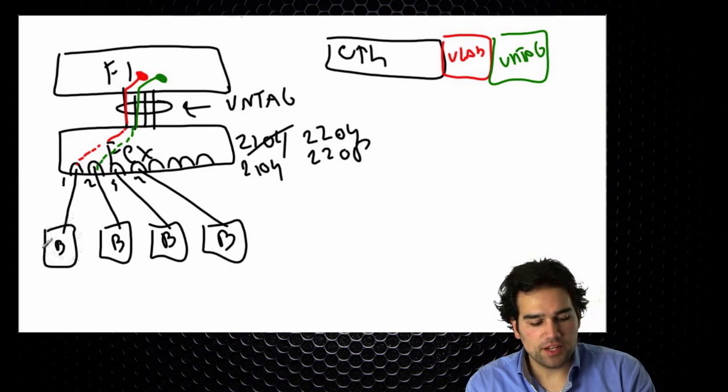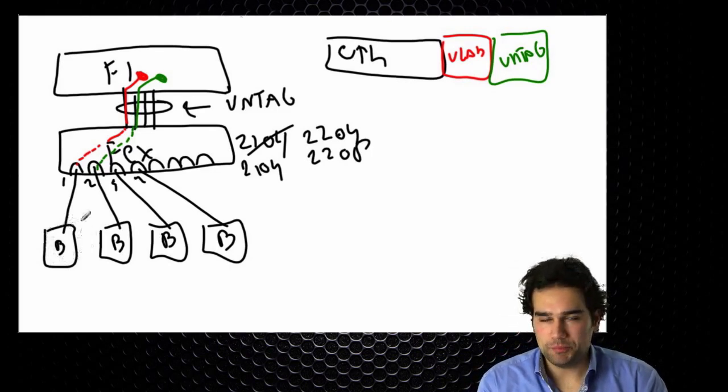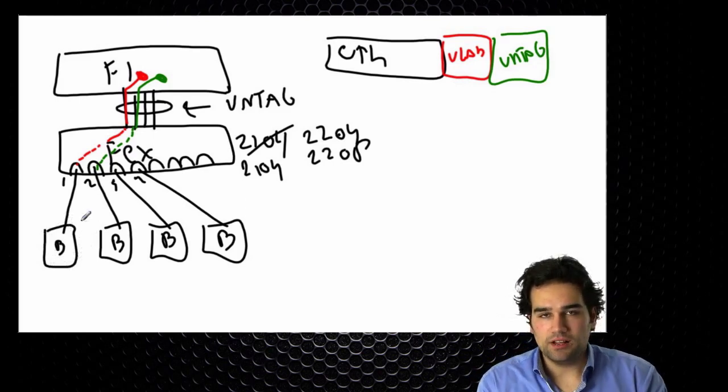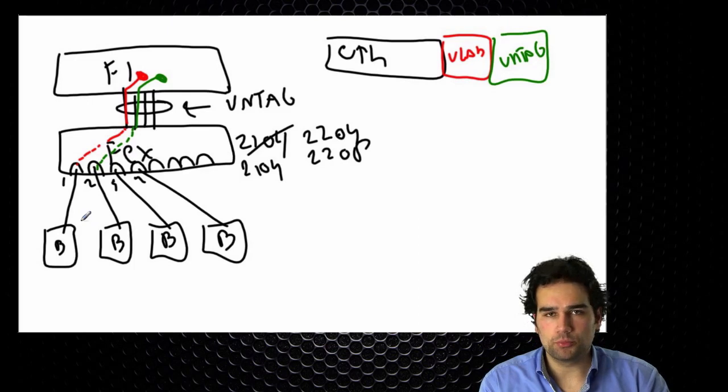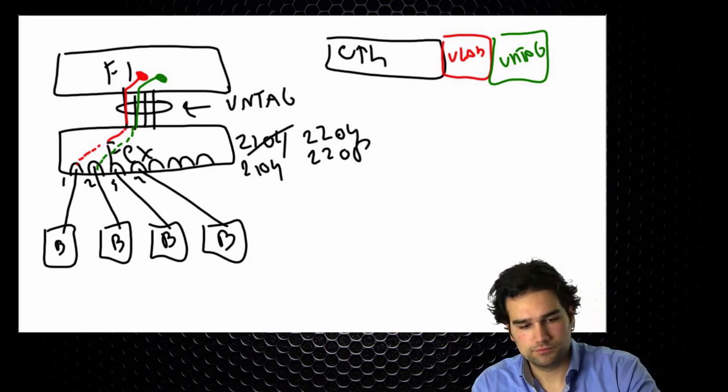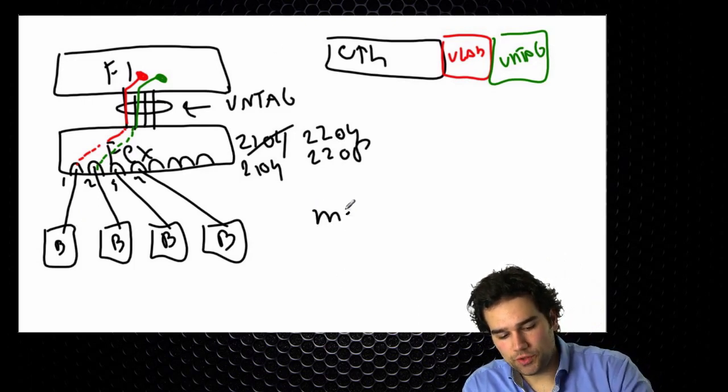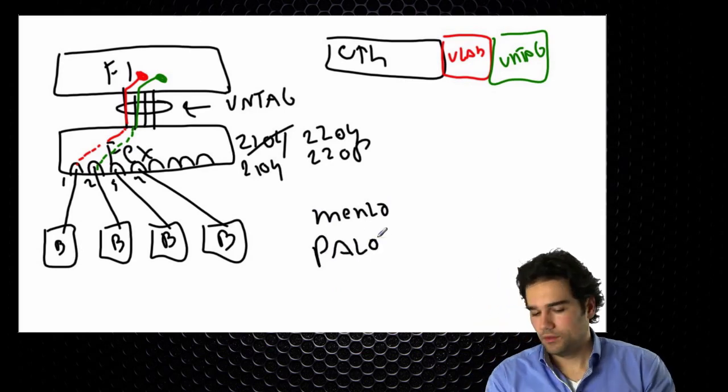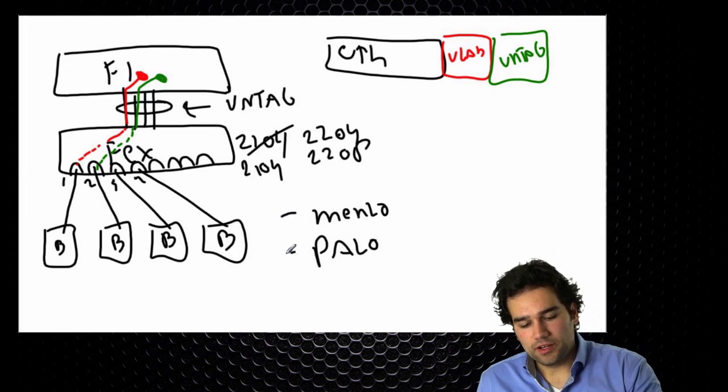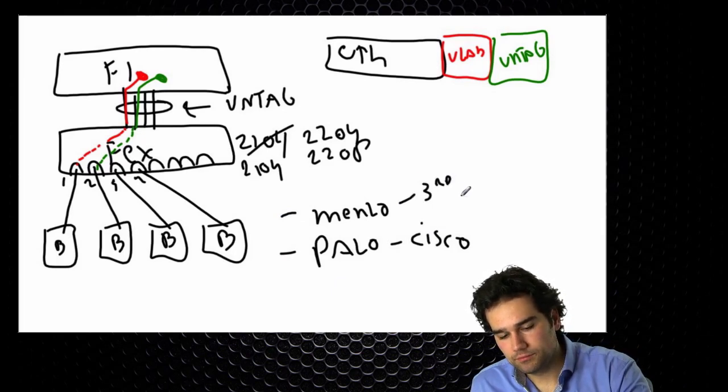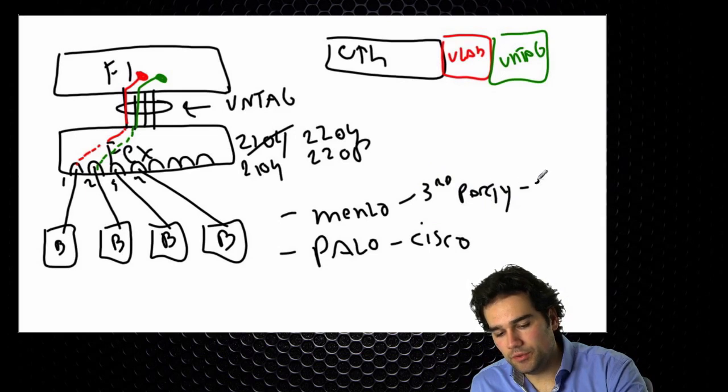Now inside the blade I have a few options when it comes down to the network interface card. Also on the UCS blueprint or on the data center blueprint you will see that you will have to deal with two types of cards. We have what's called a Menlo card and a Palo card. The difference is very clear. The Palo card is made by Cisco and the Menlo card is made by a third party like Emulex.